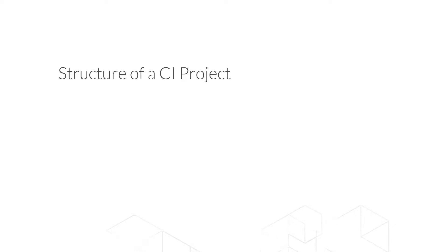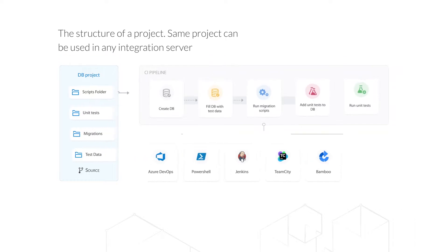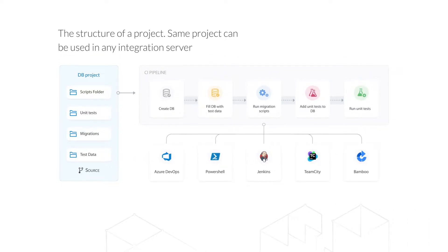Now let's talk more specifically about the structure of the CI project and how to organize it. This slide demonstrates the project structure that consists of the following folders: scripts folder, migrations, test data, and unit tests. As you can see, the same project structure can be used in various continuous integration systems — Azure DevOps, Jenkins, Bamboo, etc.